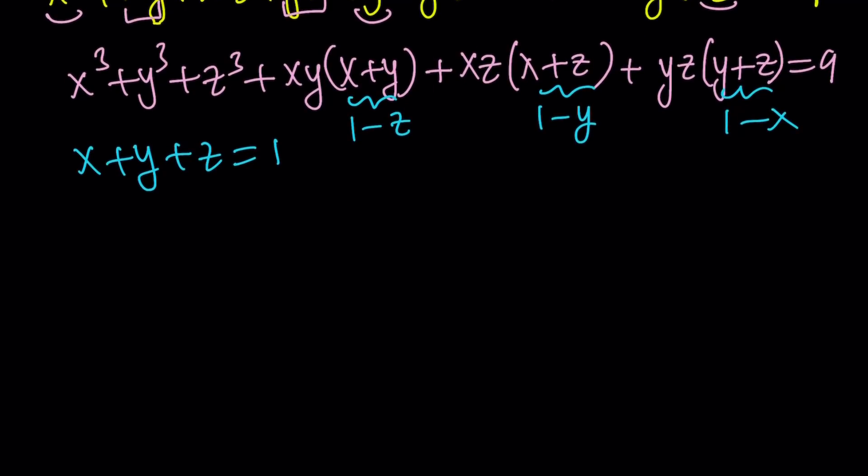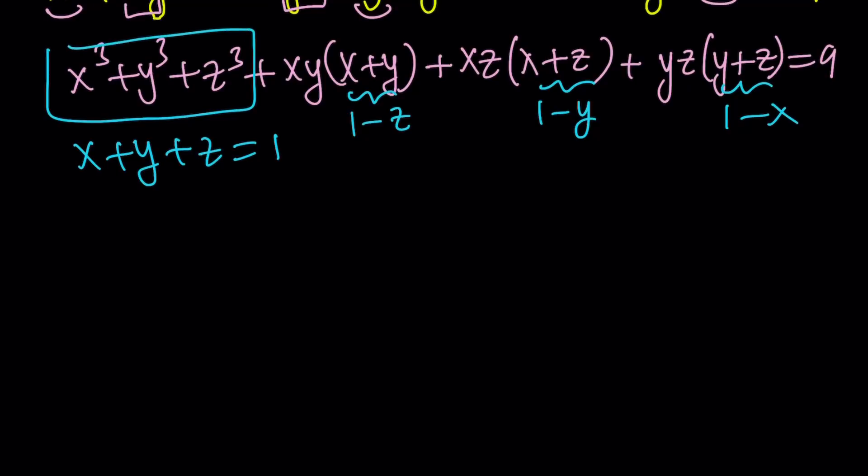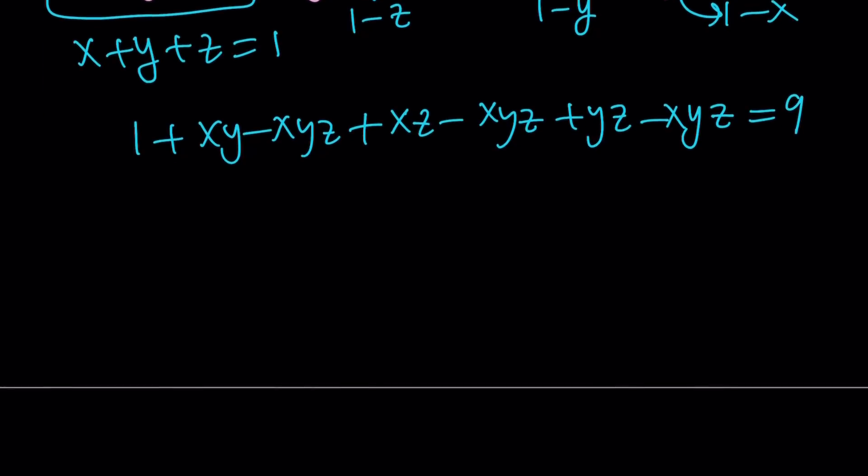And then, the sum of cubes, as you know, is equal to 1, because that was given in the original problem, remember? So we have now 1 plus x, y minus x, y, z plus x, z minus x, y, z plus y, z, because I'm distributing this, right, minus x, y, z. I mean, it's y, z, x, but it's the same thing. And then, this is equal to 9.